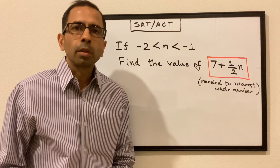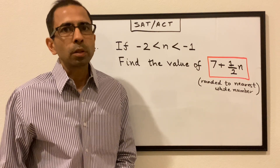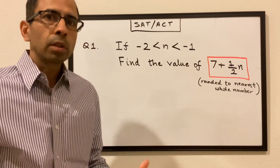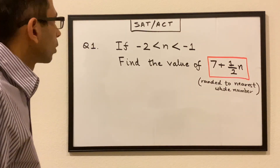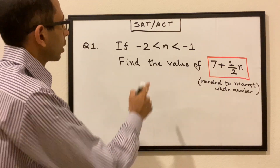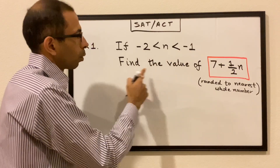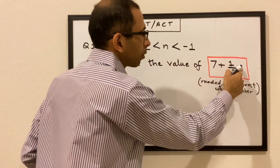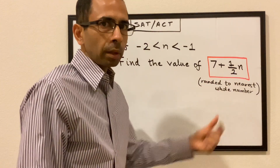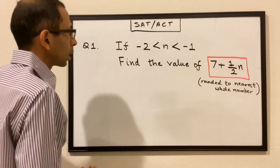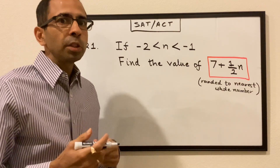Hello all, welcome to the eighth session of the SED series. In this episode we are going to do some practice questions. Let's get started with our first question: if n is less than minus 1 and greater than minus 2, what is the value of 7 plus half n rounded off to the nearest whole number? Before we get started we need to understand what operations we can do with inequalities.